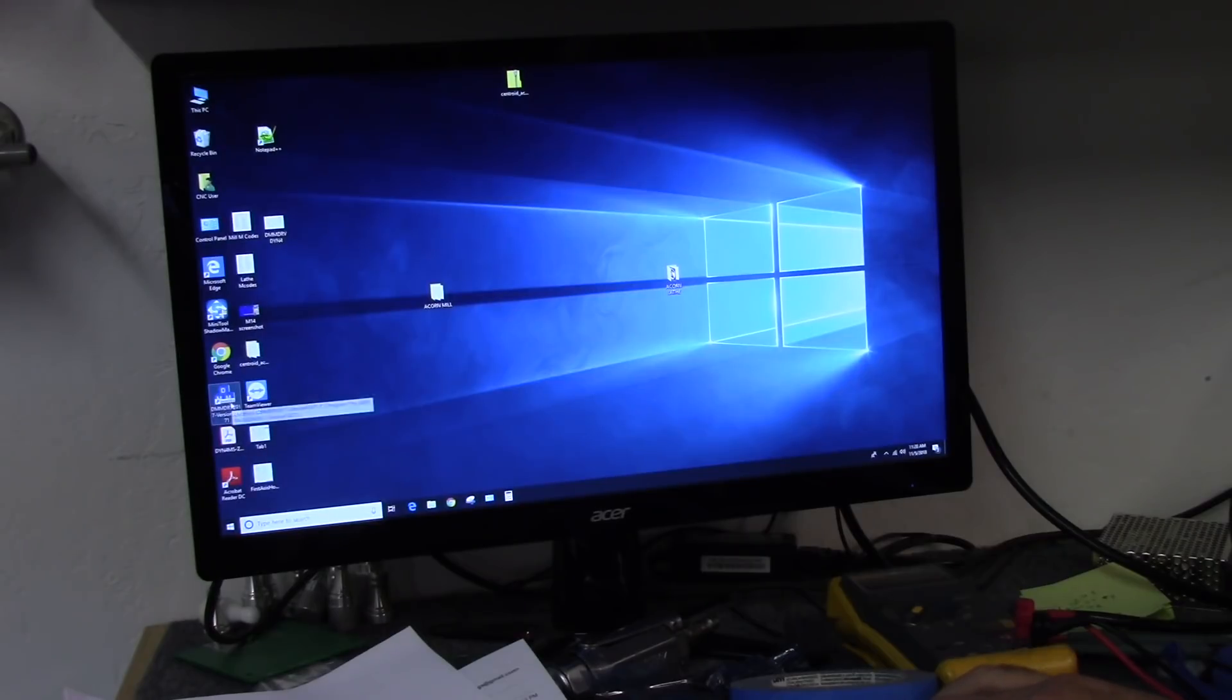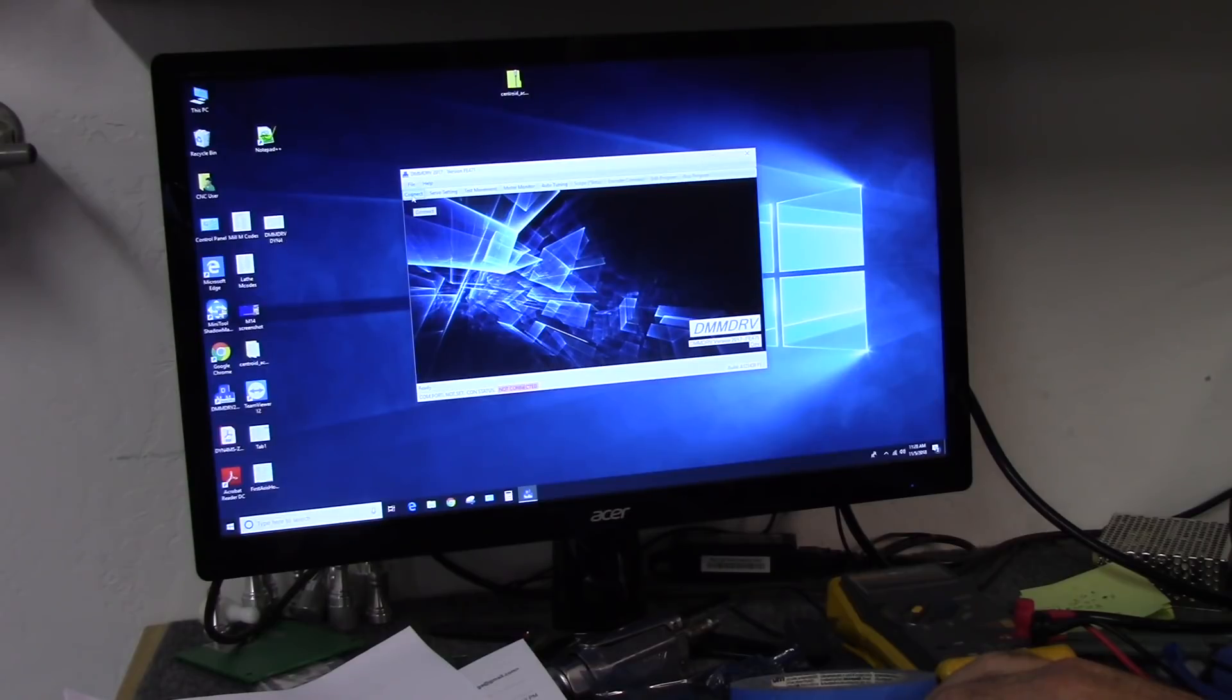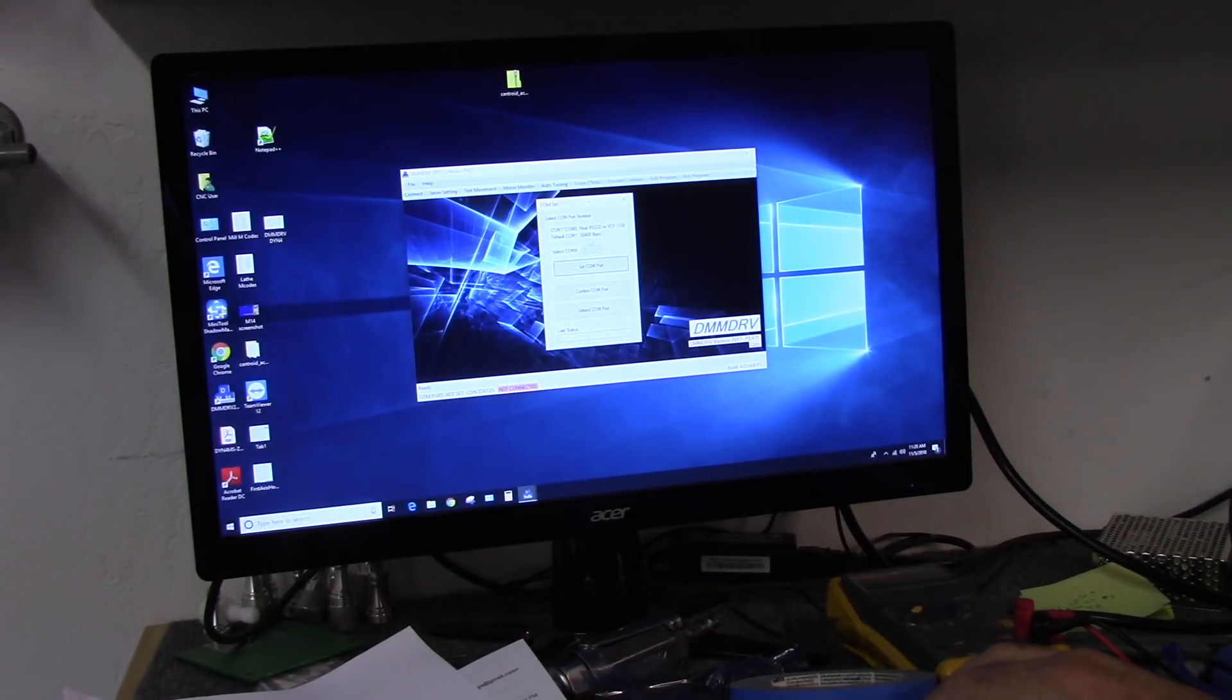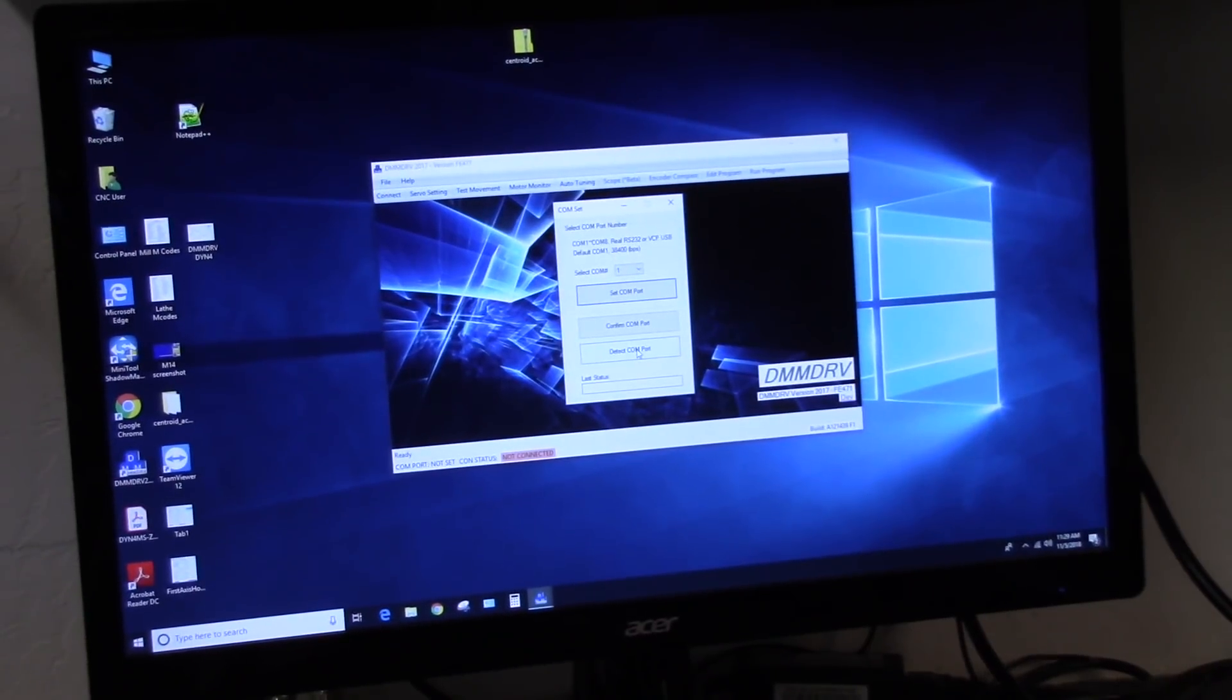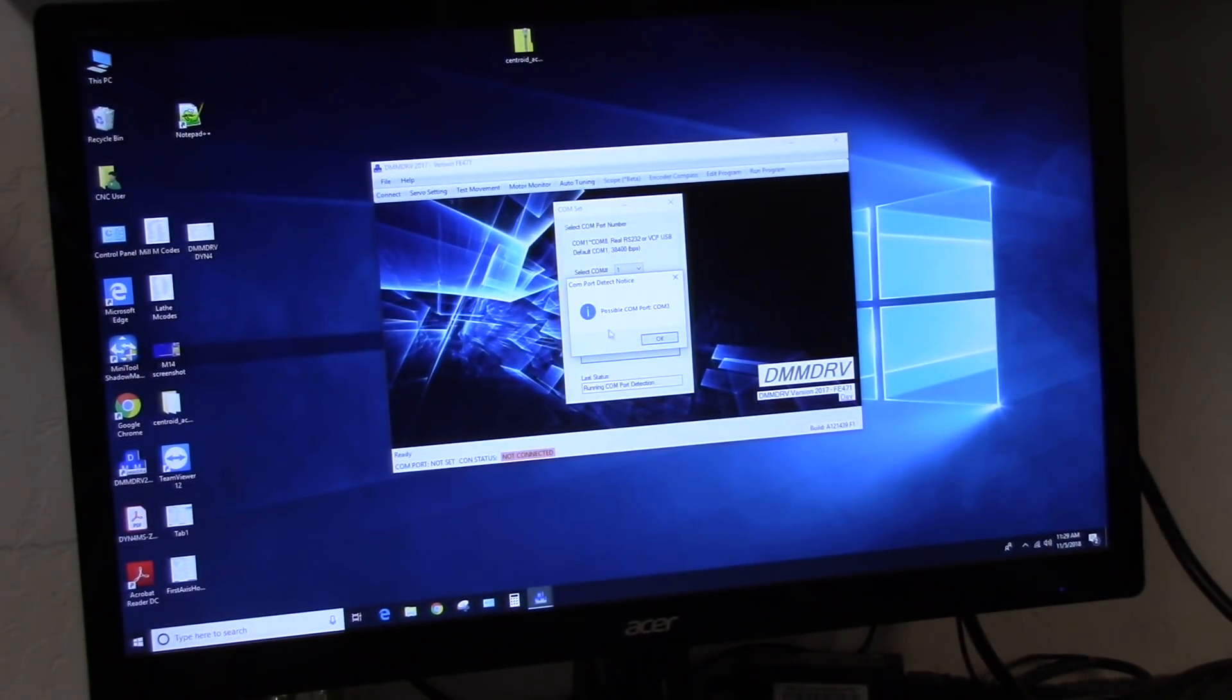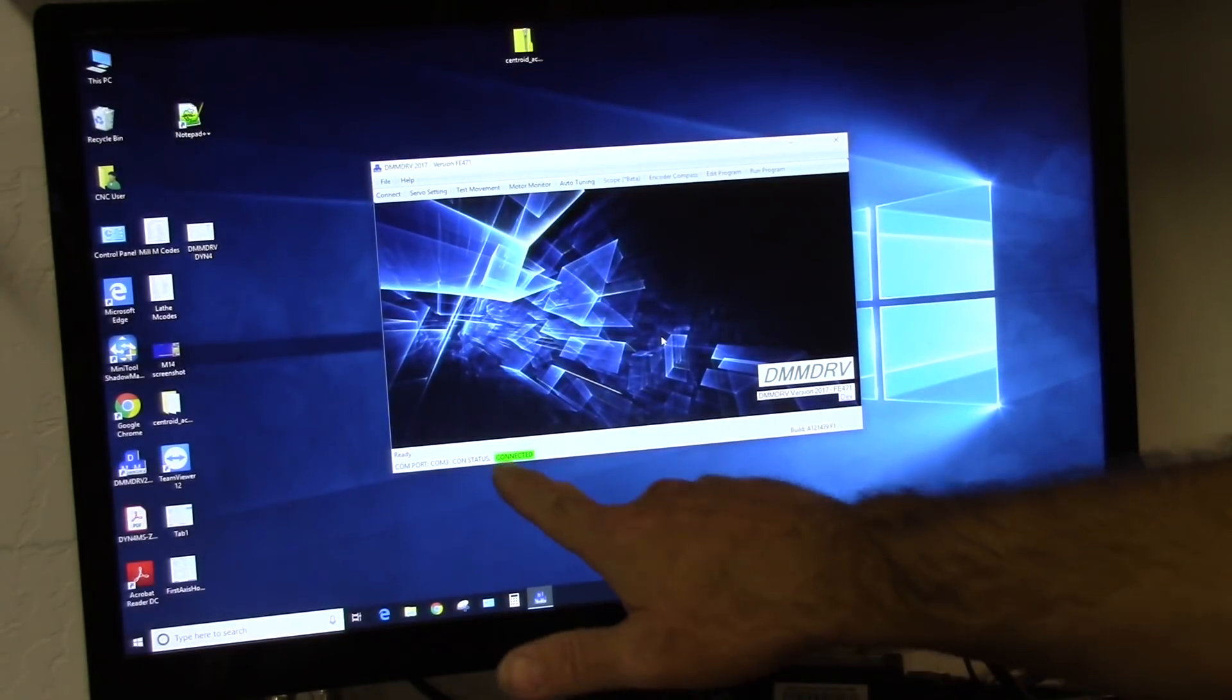So we start up the DMM DRV software and we've got to connect to the drive. We can do a detect. And it says possible COM port on COM3, and I know that's what it is, but I just wanted to show you the detect so you know which one to pick. So I'm going to go to 3, I'm going to set the COM port. Successful. And you'll see down here it's connected.